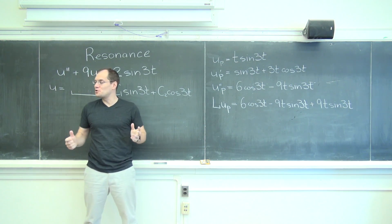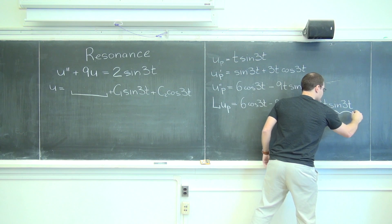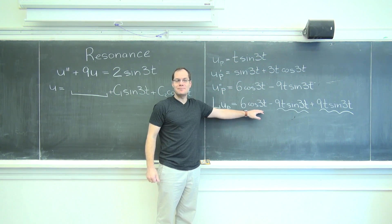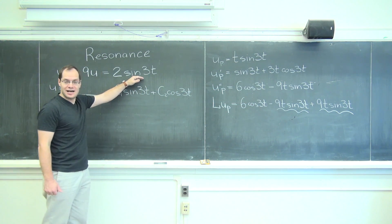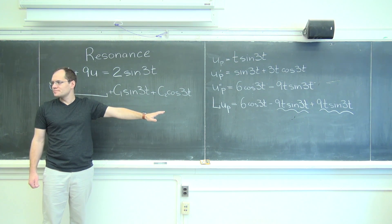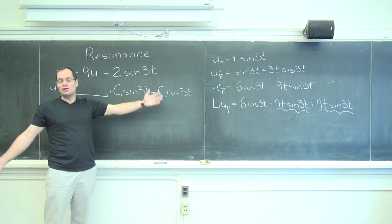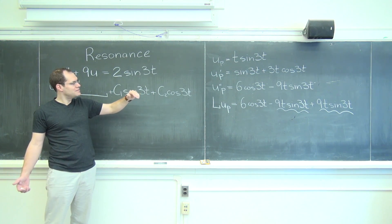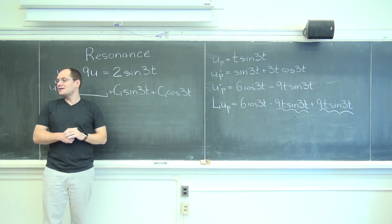Do you see it almost worked, but not quite? The good thing that happened is that the two like terms that both have t cancel each other, and you're left with 6 times cosine 3t. The one thing that didn't work is that we were hoping for sine, but we got cosine. So what should our initial guess be? T cosine 3t. So let's do it all again with t cosine 3t, and then it'll work.